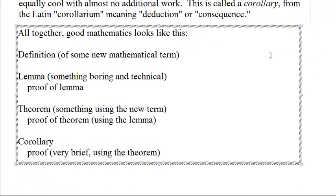Good mathematics tends to look like this: definition, theorem, proof. You define some new term, maybe you have some sort of lemma that's boring and technical, you prove it, and then you have the theorem — usually using the new term — you prove the theorem, often with a lemma, and then a corollary comes afterward using the theorem. Let's do it.